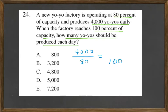What we don't know is how many yo-yos are produced at 100%. So let's go ahead and cross-multiply and divide.